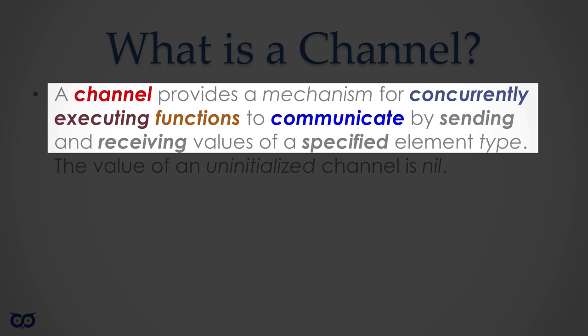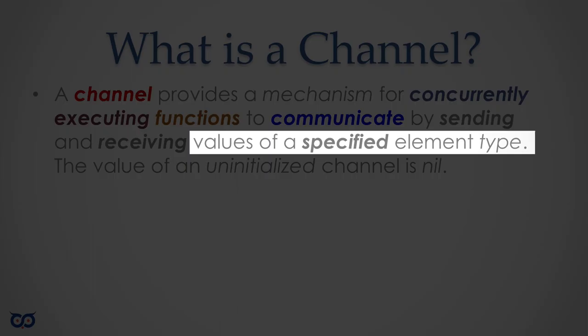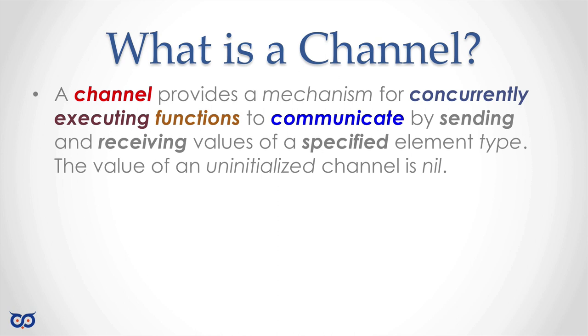From the Golang documentation: a channel provides a mechanism for concurrently executing functions to communicate by sending and receiving values of a specific element type. Concurrently executed functions means goroutines. The element type tells us a channel operates somewhat like a map, array, or slice — there's an element type you must specify and every value sent on that channel must be of that type.